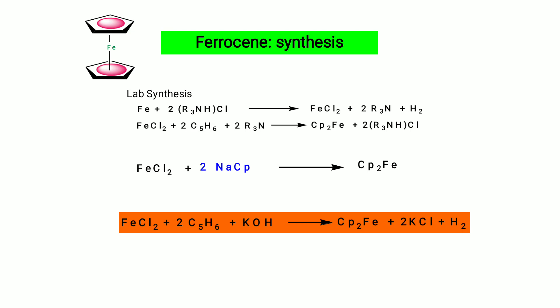Preparation of ferrocene: first react iron with amine hydrochloride to give iron chloride plus alkylamine plus hydrogen. Then react iron chloride with C₅H₆ and amine to give Cp₂Fe and amine hydrochloride (catalyst regenerated). Alternatively, alkyl chloride reacts with sodium Cp to give Cp₂Fe. Also, FeCl₂ + 2 C₅H₆ + KOH → Cp₂Fe + KCl + HCl.